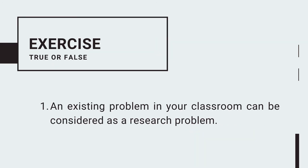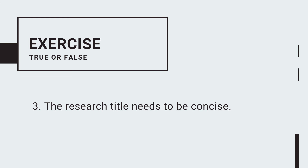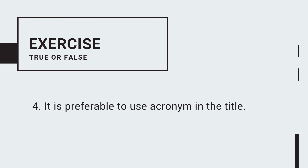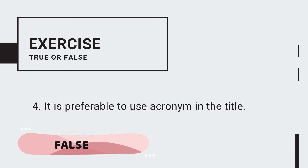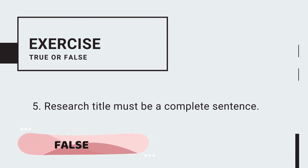Let us once again identify if the statements are true or false. Number one: an existing problem in your classroom can be considered a research problem. This item is true. Number two: the research title must summarize the main idea of the study. This statement is true. Number three: the research title needs to be concise. This statement is also true. Number four: it is preferable to use an acronym in the title. Number four is false — you may use an acronym, but at least in the title, write out what the acronym stands for. Number five: the research title must be a complete sentence. No — it must be a phrase with no punctuation marks.